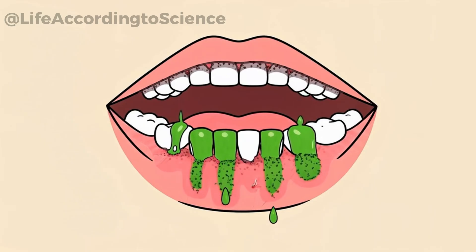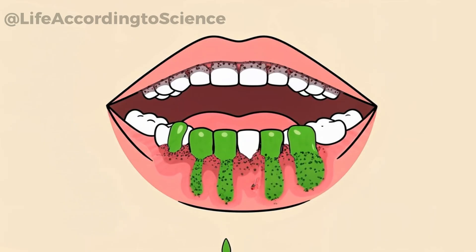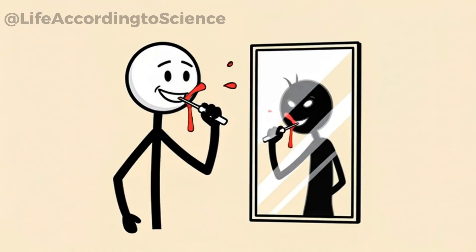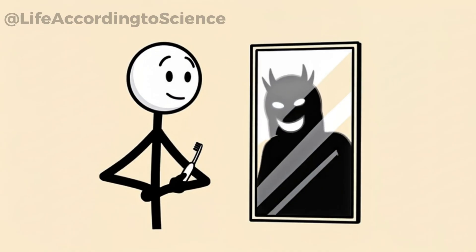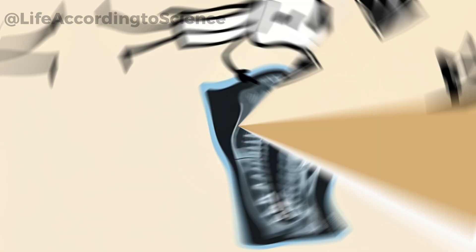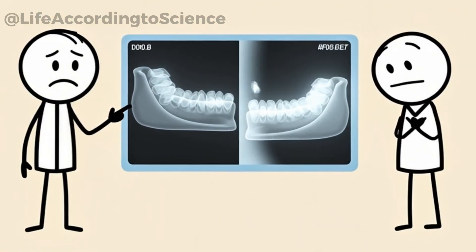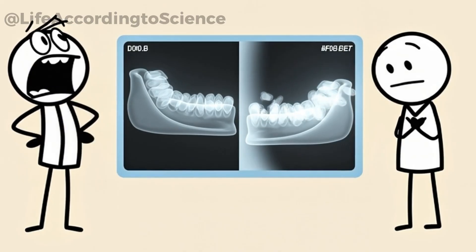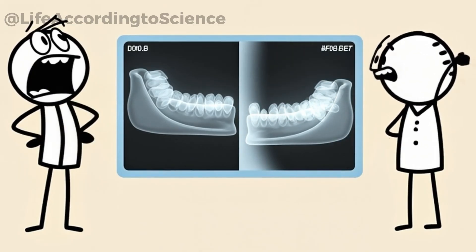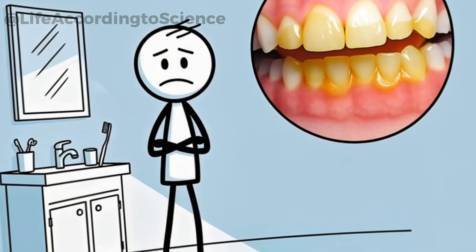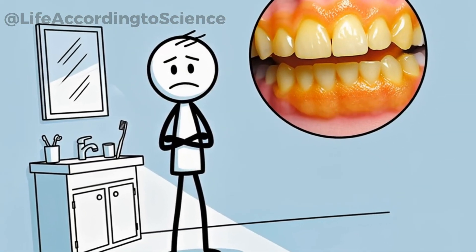This stage is often ignored because it's painless at first. Many think a little blood when flossing is normal, but it's actually the first chapter of a much darker story. Left untreated, gingivitis can progress to periodontitis, a severe condition that destroys the bones supporting your teeth. And it all starts here quietly after just a few weeks of neglect.